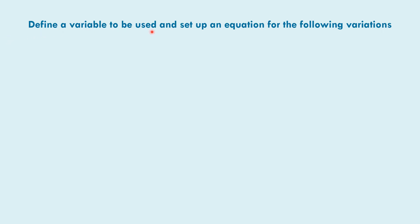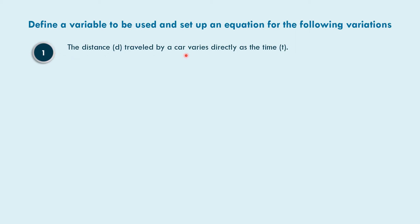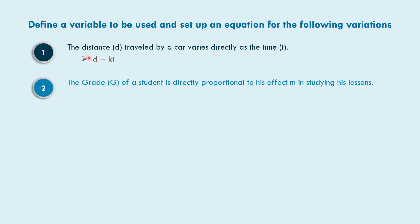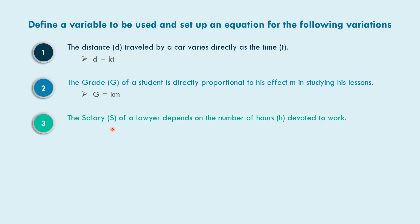Define a variable to be used and set up an equation for the following variation. The distance d traveled by a car varies directly as the time t. So the equation is d equals k times t. How about number two? The grade g of a student is directly proportional to his effort m in studying his lesson. So it means g equals k times m. How about number three? The salary s of a lawyer depends on the number of hours h devoted to work. So s equals k times h.